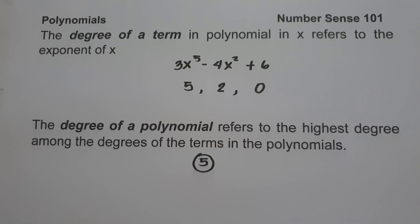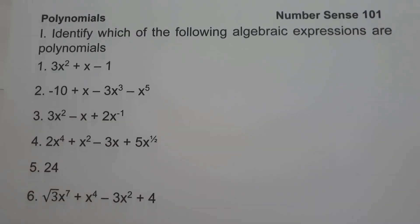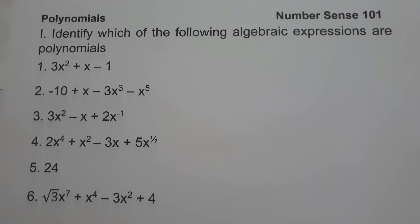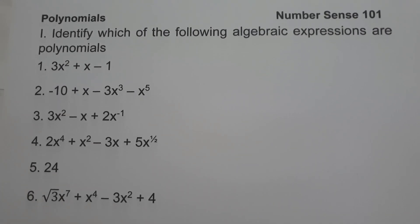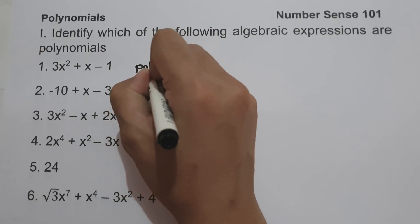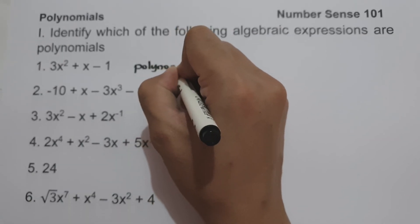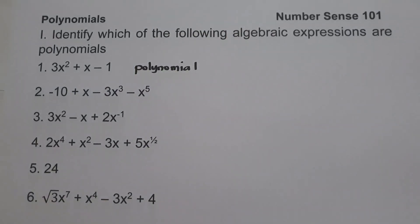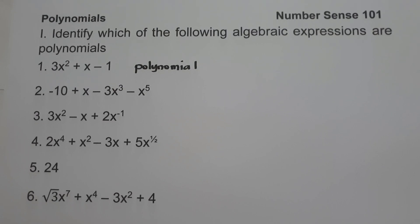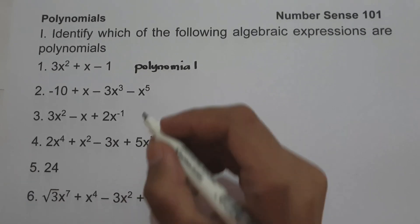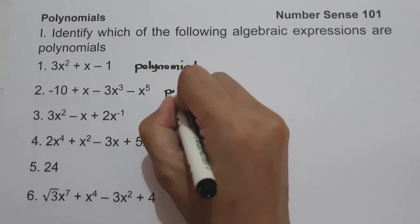Let's start with some examples. On the first set of examples, we are going to identify which of the following algebraic expressions are polynomials. Number 1: 3x squared plus x minus 1. Number 1 is an example of a trinomial, so therefore it is a polynomial. Number 2: negative 10 plus x minus 3x cubed minus x raised to 5. Since there is no negative or fractional exponent, number 2 is also a polynomial.